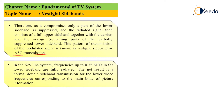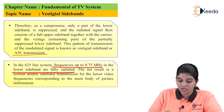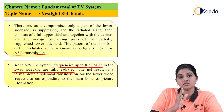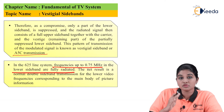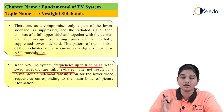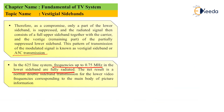In the 625-line system, which is the European standard for television, frequencies up to 0.75 megahertz in the lower sideband are fully radiated. Frequencies above 0.75 megahertz are suppressed, while frequencies up to 0.75 megahertz are radiated using vestigial sideband transmission. Because of this, it results in normal double sideband transmission for lower video frequencies, corresponding to the main body of the picture information.